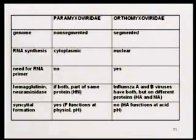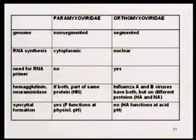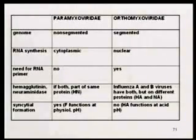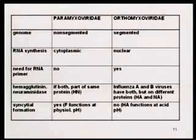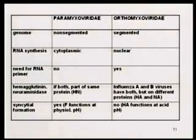That segmentation makes a really important difference to flu epidemiology, as we'll see in the upcoming lecture. RNA synthesis in paramyxoviruses is cytoplasmic — also true of myxoviruses generally — but the true influenza viruses are exceptional in that their RNA synthesis occurs in the nucleus.